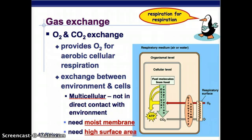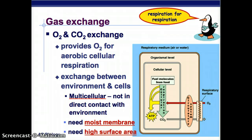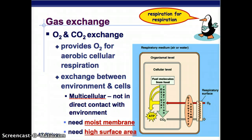We get that oxygen for respiration, and it's an exchange between the environment and the cells - the air that you breathe in and your cells. For multicellular organisms it's a little more complicated because they're not in direct contact with the environment. Two things you absolutely need for a good respiratory system are a moist membrane and high surface area.